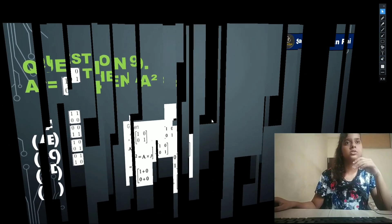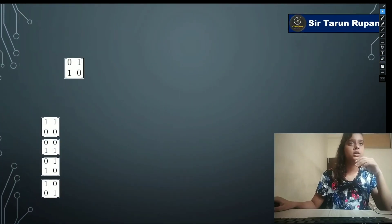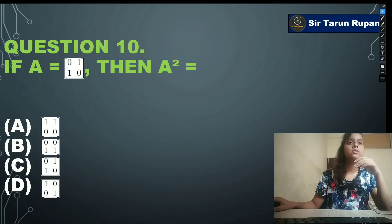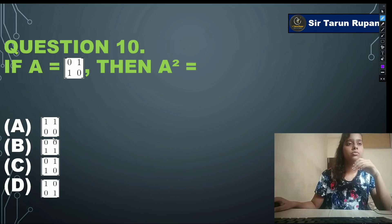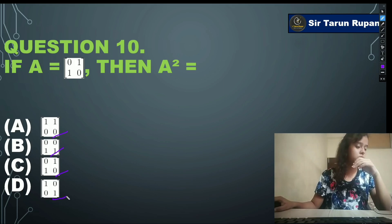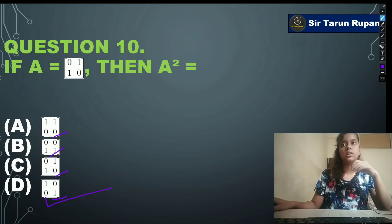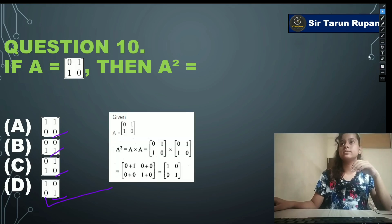Question 10: if A = [0,1;1,0], then A² equals — option A: [1,1;0,0], option B: [0,0;0,1], option C: [1,0;1,1], option D: [1,0;0,1]. Our correct answer is option D: [1,0;0,1]. You can see the solution on screen.